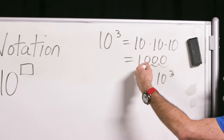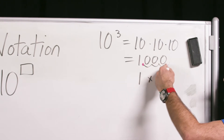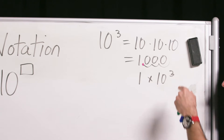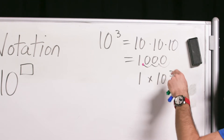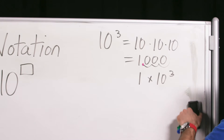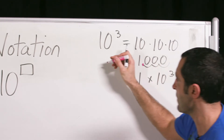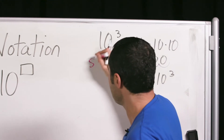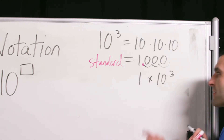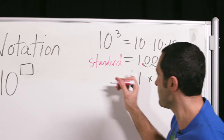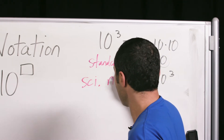Every time we multiply by ten, we make the number bigger by a factor of ten, and so we move it across. This number, one thousand, is called standard form. And this — one times ten to the three — is called scientific notation.